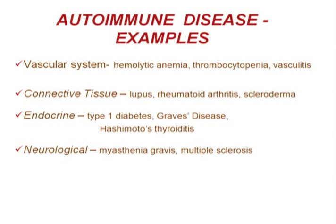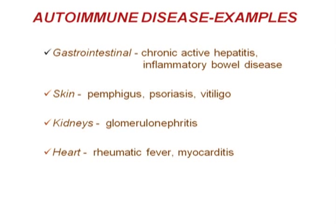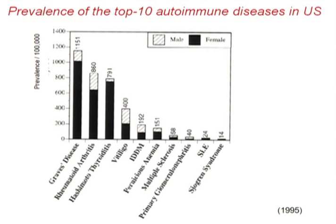There is an autoimmune disease for every organ system. I want to show you a list of autoimmune diseases — virtually everybody here has heard of these diseases, but many don't realize they are all members of the autoimmune disease family. They are clinically very different, seen by different kinds of physicians, and treated in very different ways. But the point I'm going to emphasize are the commonalities — the common threads that unite all of these diseases.